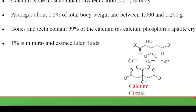All of that results in 1.5 percent of your total body weight, about 1000 to 1200 grams of calcium in your body. The bones and teeth contain the largest percentage — up to around 99 percent of the calcium in your body is found in teeth and bones. It is found as calcium phosphate in hydroxyapatite crystals. One percent is found in the intra- and extracellular fluids: the plasma, intracellular fluids, and other body compartments.